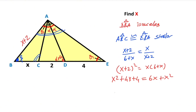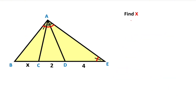Notice that the X squared terms are the same and cancel. So 2X equals 4, which means X is going to be two units. This was the first method. Now we will calculate the value of X using the second method.